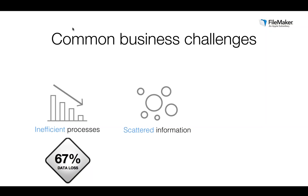There's also the issue of scattered data — someone has the information in their head, someone else has it on their iPad out in the field, and someone else has it on their laptop that they took on vacation. The information your business needs is never where you need it, when you need it. The Paperless Project found that four weeks a year were spent by managers simply looking for mislabeled, misfiled, or missing information — like taking a whole month out of the calendar and throwing it away. If you're watching this webinar, there's a good chance you already sense and feel this in your organization.